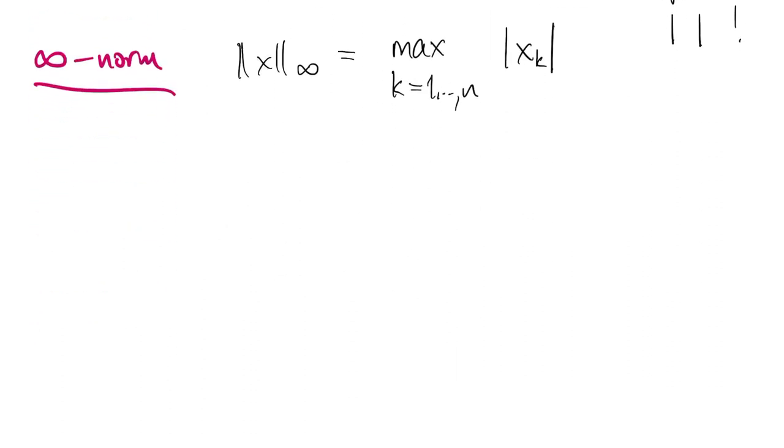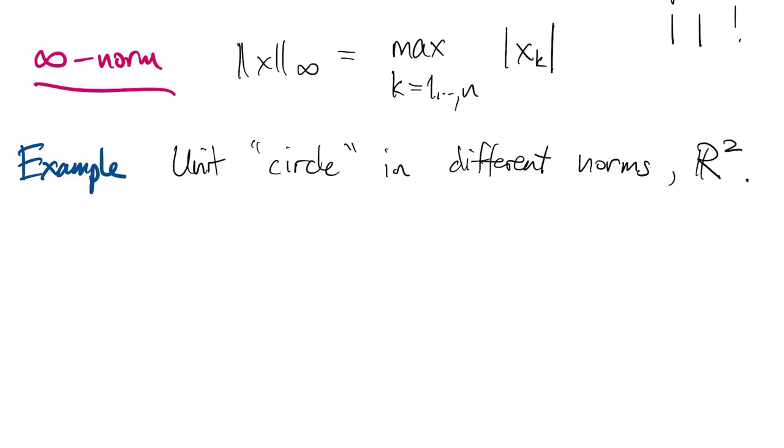So for example, let's look at unit circles, where the distance is measured in different norms, all of them in two real dimensions. So if we look at all the vectors with a unit 2-norm, that means that 1 is equal to x1 squared plus x2 squared, which is just the usual circle.